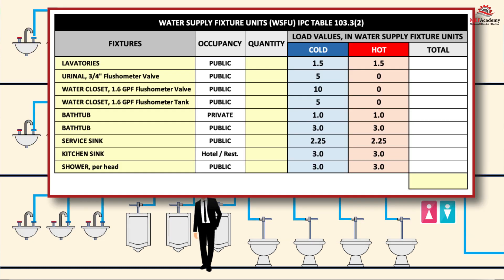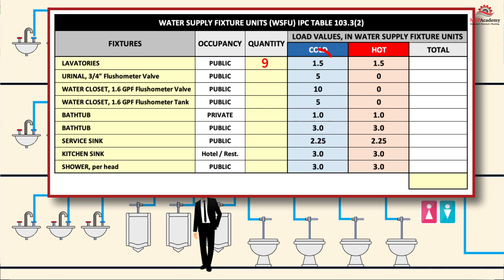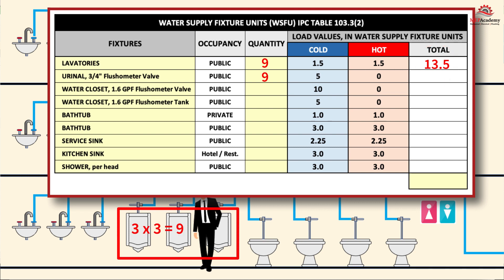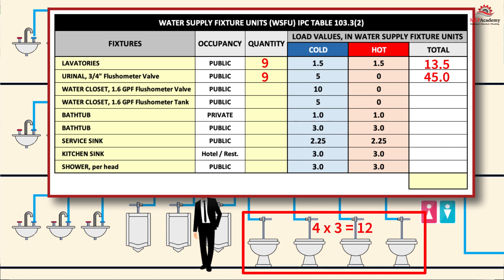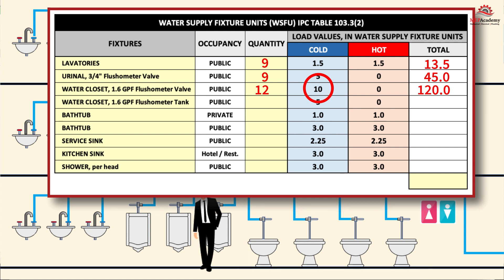Multiply the WSFU of each fixture by the number of fixtures of that type to get the total WSFUs for each fixture type. For example, there are three lavatories per floor times three floors, equaling 9 lavatories total; at 1.5 WSFU each, that gives 13.5 fixture units. There are 9 urinals at 5 fixture units each, totaling 45. There are 4 water closets per floor times 3 floors for 12 water closets; at 10 WSFU each, that equals 120 fixture units.